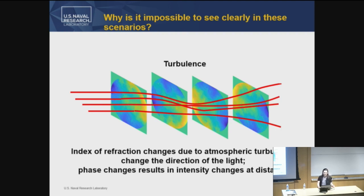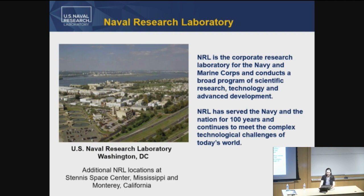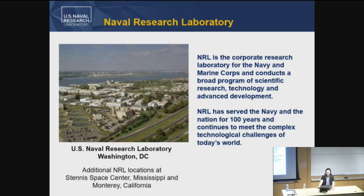Before I get too far, I want to talk a bit about where I work and why some of these problems are important to us. I work at the Naval Research Laboratory in Washington, D.C. In the distance over the Potomac River is Reagan National Airport. We are the research laboratory for the Navy and the Marine Corps. NRL is the oldest DOD lab — we are celebrating our 100th birthday this summer. Our main headquarters is in Washington, D.C., with locations in Stennis Space Center, Mississippi, and Monterey, California.